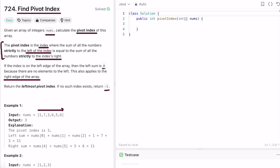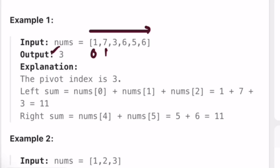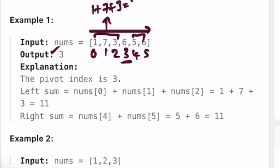Let's take the example and see how we get the output as three. The input array is 1, 7, 3, 6, 5 and the pivot index position is three. The elements to the left sum to 1 plus 7 plus 3 which is eleven, and the elements to the right sum to 5 plus 6 which is also eleven. Both are equal at index three, hence index three is the output.